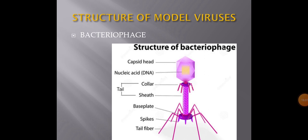Let's see the structure of some model viruses. First, the structure of bacteriophage — a tadpole-shaped virus studied in class 9. It has a head and a tail. The head is the capsid enclosing a nucleic acid core of DNA. Below the head is a collar, and just beneath it is the tail, composed of a contractile sheath made of protein. At the base of the tail there is a base plate with spikes and tail fibers. Just beneath the base plate, at the end of the core tube, there is an enzyme called lysozyme, used for penetration into the host cell.